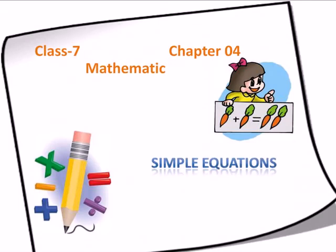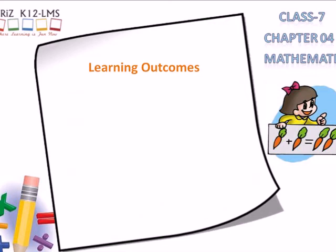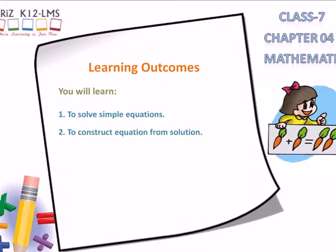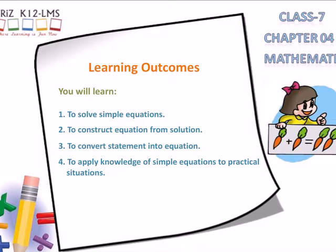Class 7 Maths Chapter 4: Simple Equations. Learning Outcomes: You will learn to solve simple equations, to construct an equation from a solution, to convert a statement into an equation, to apply knowledge of simple equations to practical situations, and to solve word problems based on simple equations.